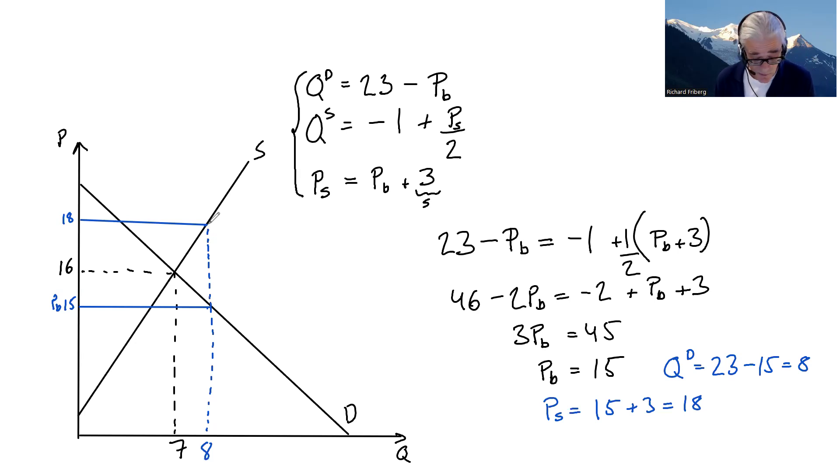With the subsidy, price that buyers are paying is lowered. Price that suppliers are getting is higher. As a result, quantities expand. Let's look at the welfare effects of this.